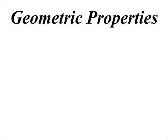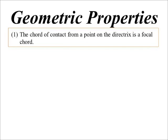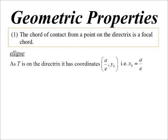All right, let's have a look at some geometric properties of conics. So the first one, chord of contact from a point on the directrix will be a focal chord. So we'll look at the ellipse. Now, T, that external point, is on the directrix. So therefore, instead of calling it x0, y0, I can call it a on e, y0.